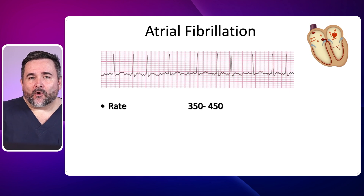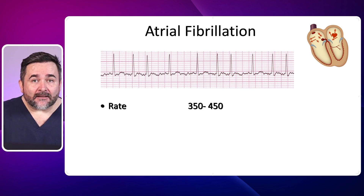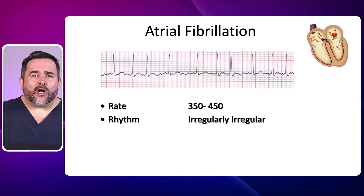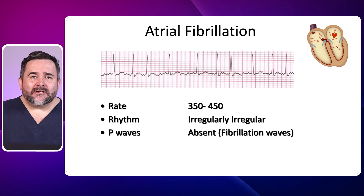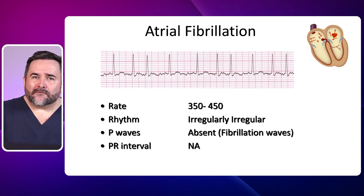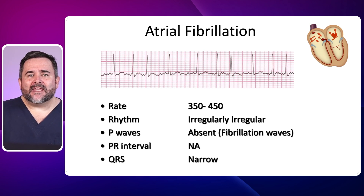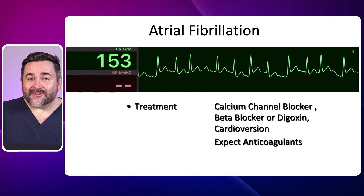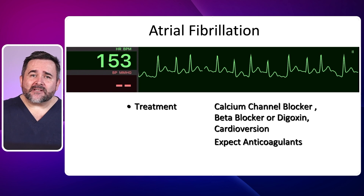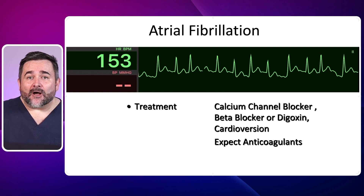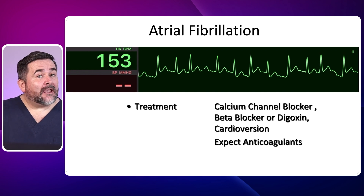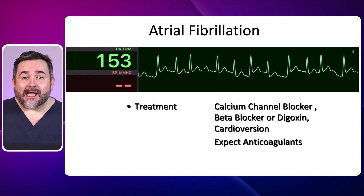The rate is 350 to 450. The rhythm is irregularly irregular — listen closely, the rhythm is irregularly irregular. You will notice that the R to R interval distances are constantly changing. P waves are absent and we only see fibrillation waves. The PR interval is not measurable and the QRS complex is narrow. Always think AF when you see a rhythm that's irregularly irregular on your NCLEX. Treatments can include calcium channel blockers, beta blockers, or digoxin if the other options do not work. In unstable atrial fibrillation, synchronized cardioversion will be performed. If the patient has a history of AF, expect long-term anticoagulation.